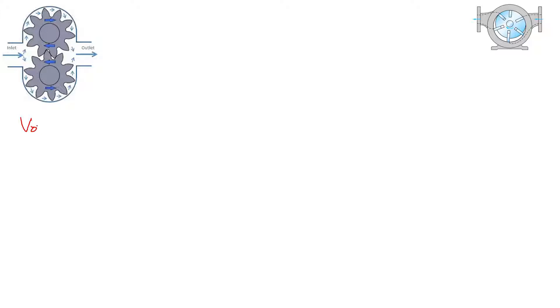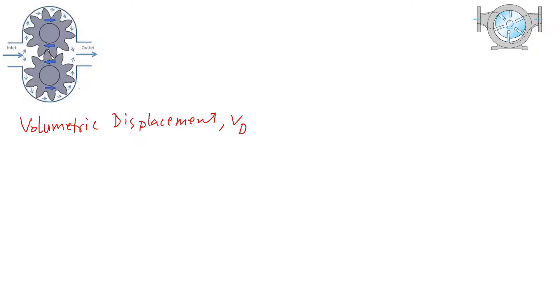To calculate the volumetric displacement of this gear pump, Vd, so that we can calculate the flow rate. If we know the volumetric displacement, we can multiply by the revolutions per minute to get the flow rate.